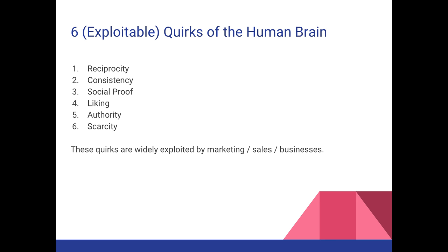Next I want to explore six widely exploited quirks of the human brain: reciprocity, consistency, social proof, liking, authority, and scarcity. Before you think about how to exploit them for penetration testing, you should understand that these quirks are already widely exploited by capitalism, marketing, advertising, and sales every single day. By the end of this part of the lecture, you'll see why, and maybe your eyes will be opened.